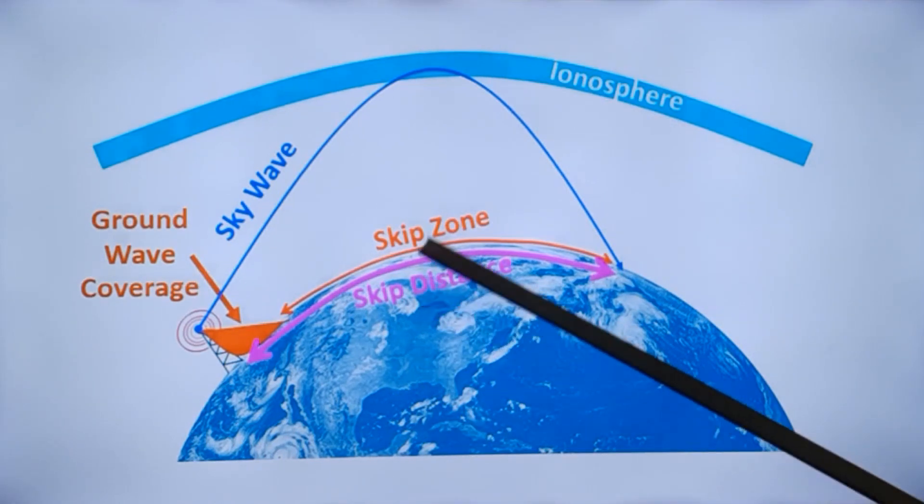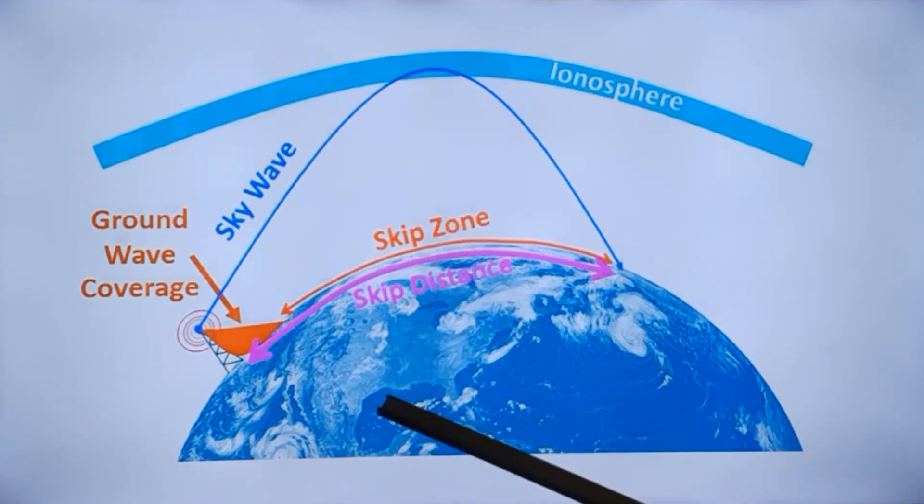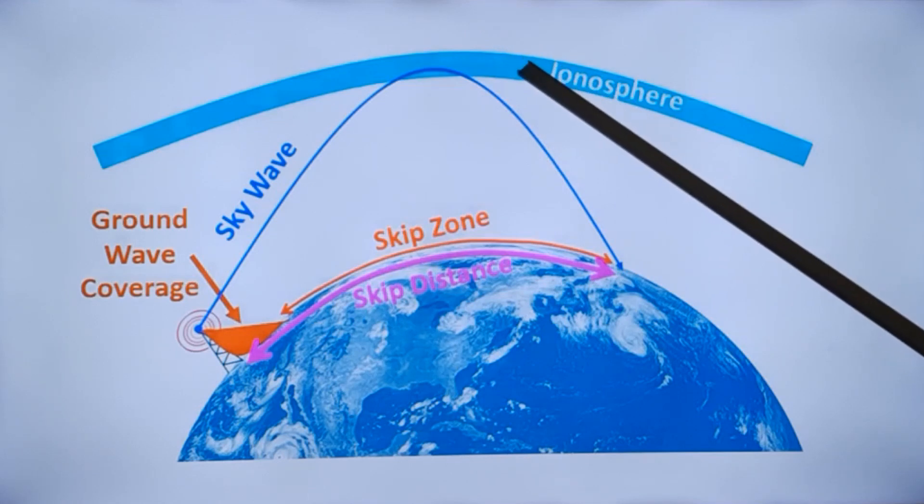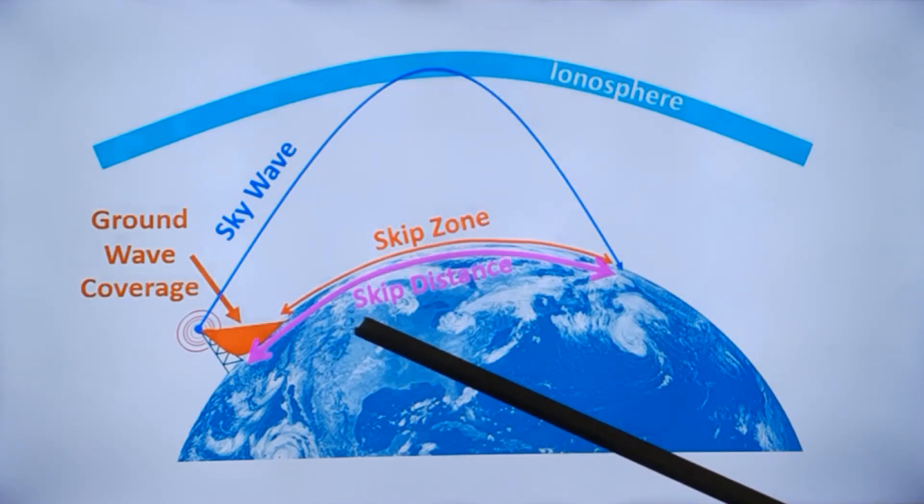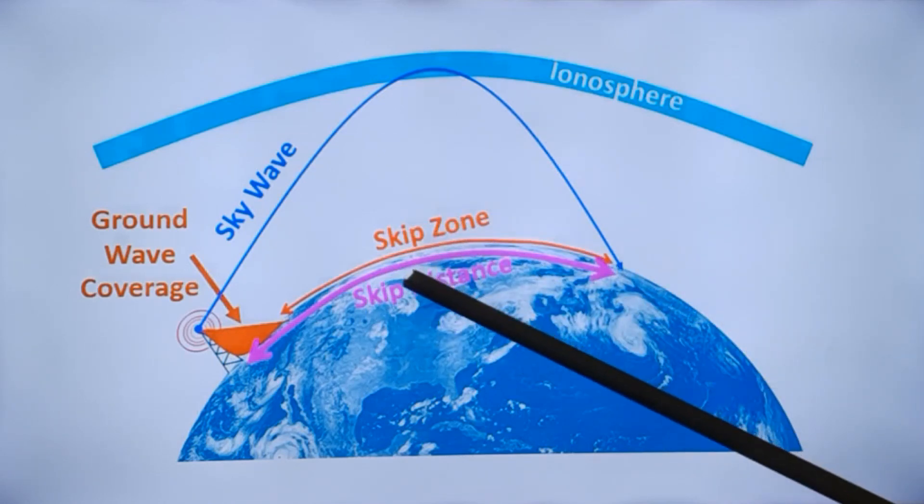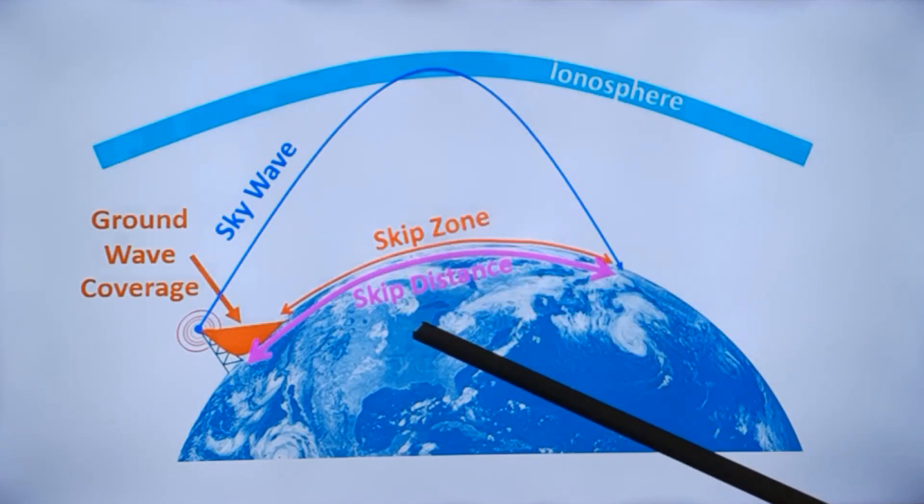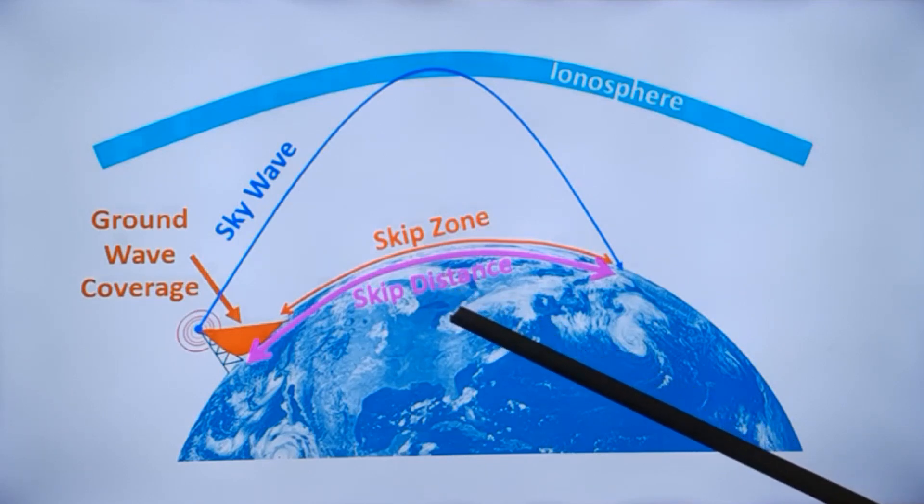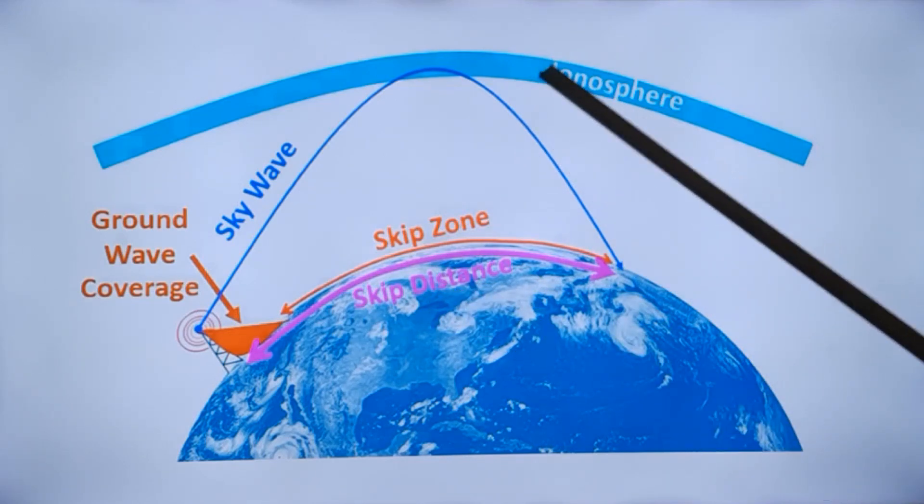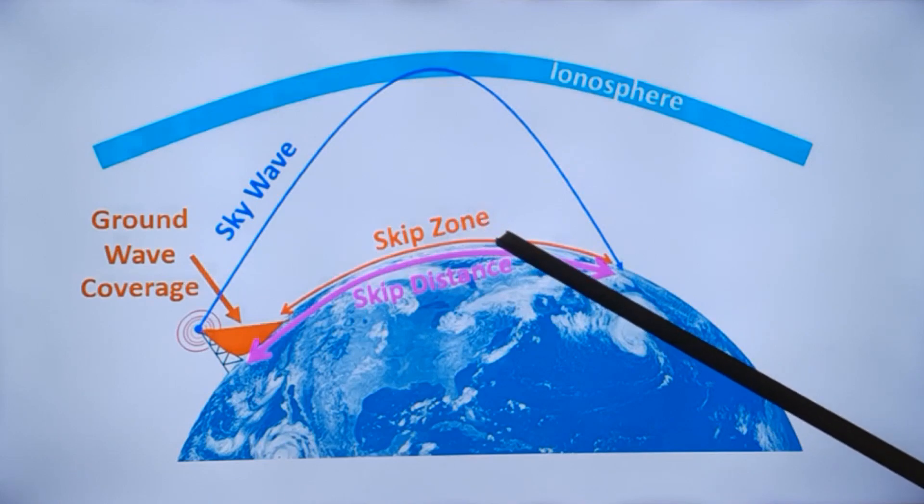The skip zone and skip distance are not static. It will change according to the ionospheric ionization conditions. It will be different at daytime and nighttime as well as between morning and noon there will be difference because ionospheric ionization conditions change.